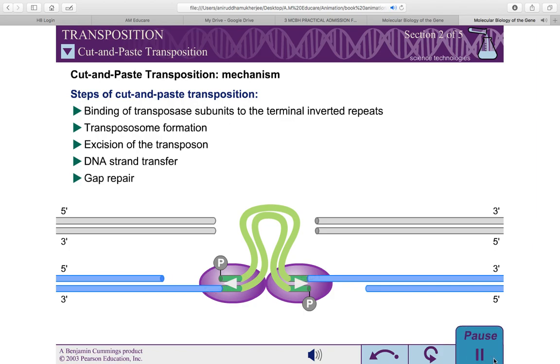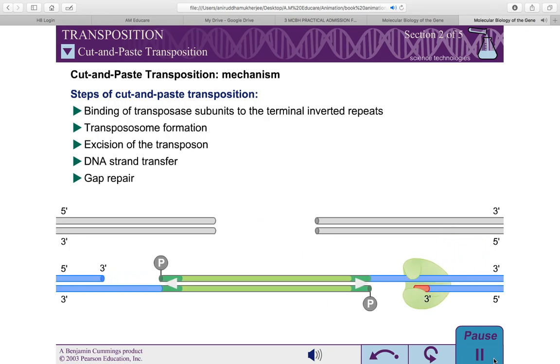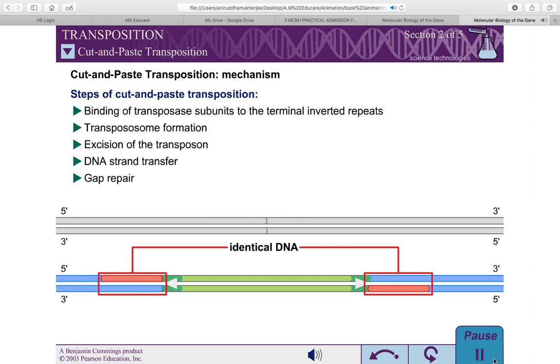The gap in the target DNA resulting from the staggered attack on the two strands is then filled in by cellular DNA repair proteins. The 3' hydroxyls of the target strands serve as primers for DNA replication. Filling in these gaps gives rise to DNA duplications that flank the transposons. These sequences are called target site duplications.